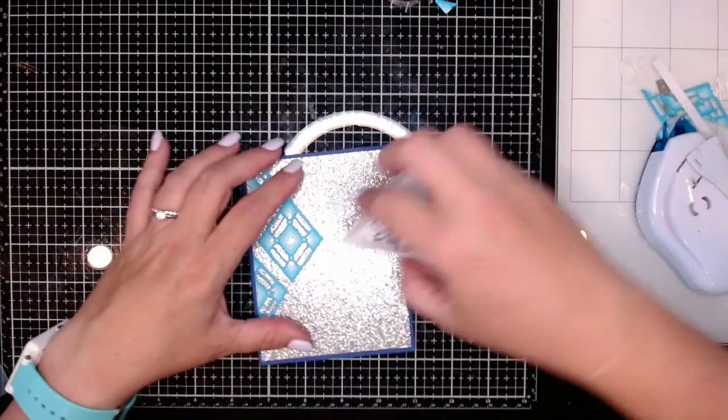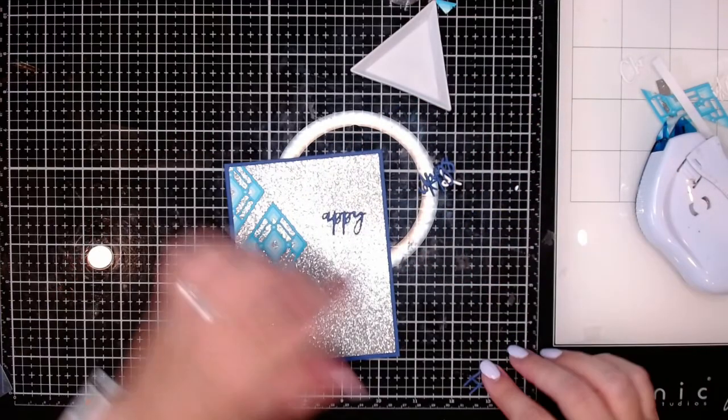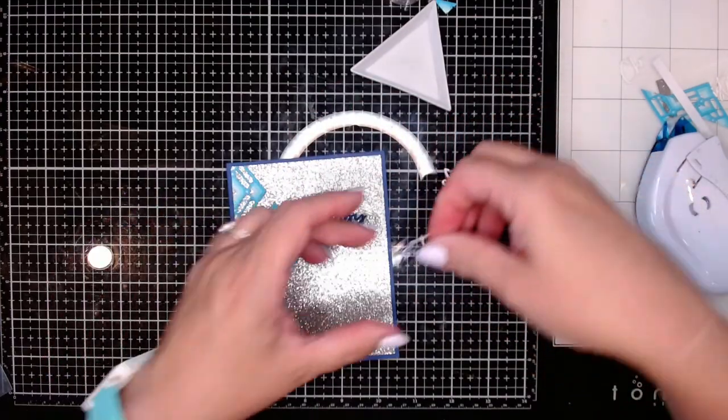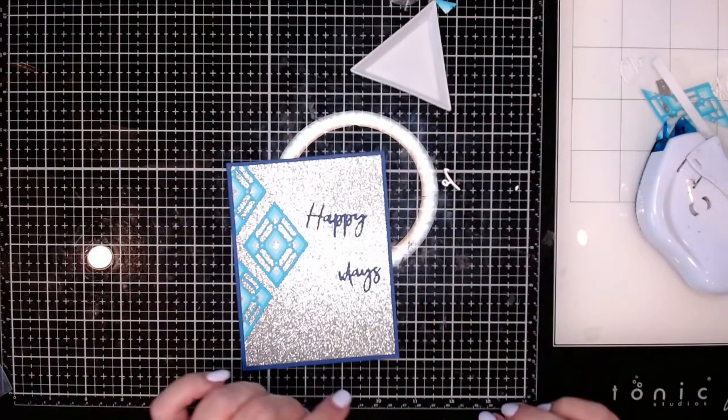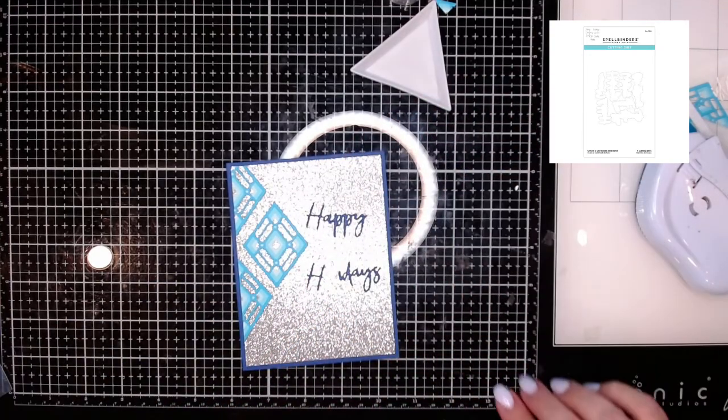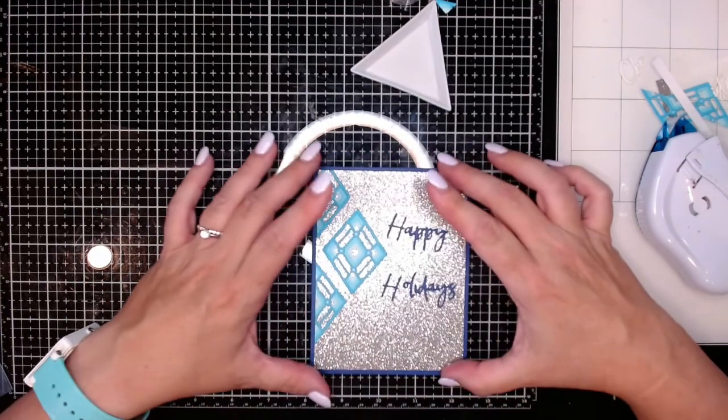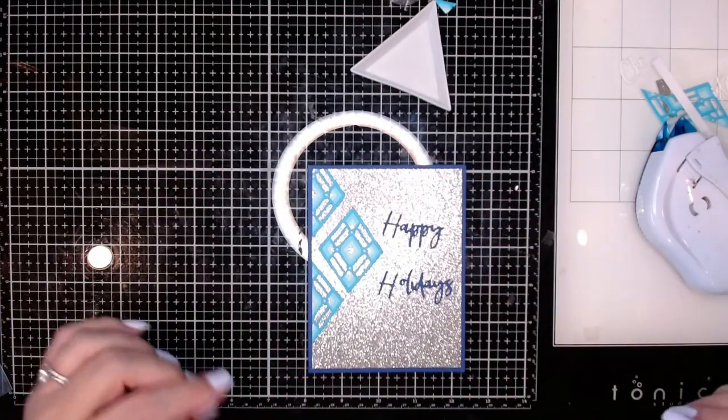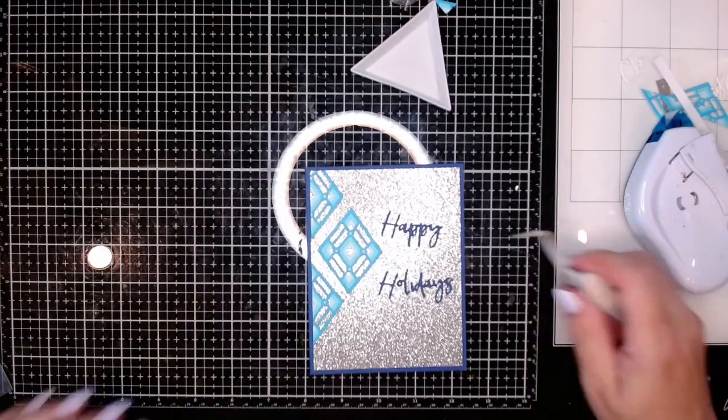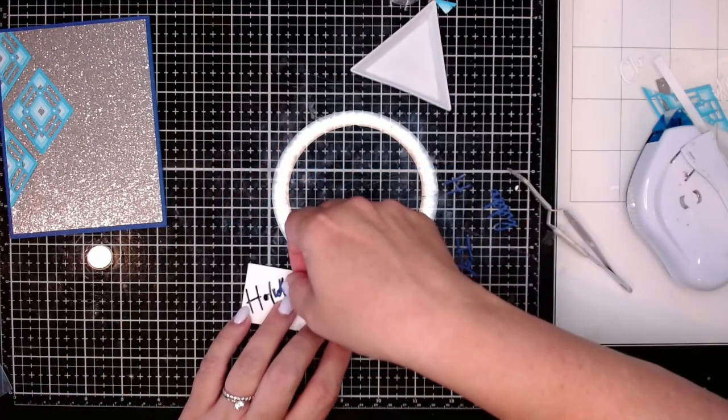For the sentiment, I'm using another of the die sets from that Christmas in July new releases. This is from the Tis the Season collection, and it's the Create a Christmas Sentiment Edge Die. We've got a lot of little Christmas words and you can create a bunch of different sentiments with that. I cut out two or three layers, finishing off with that dark blue cardstock. It's going to be the top piece, and I did a few layers because I wanted it to kind of pop on my card.